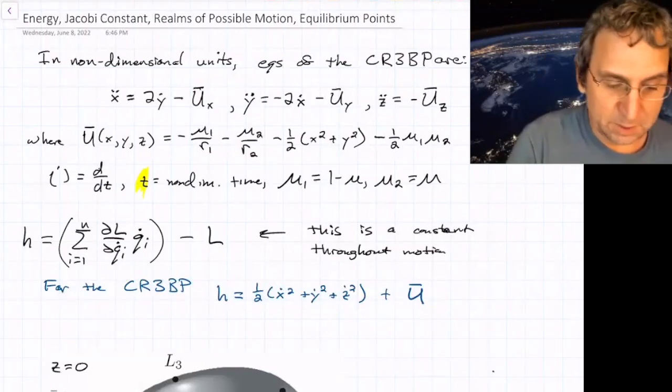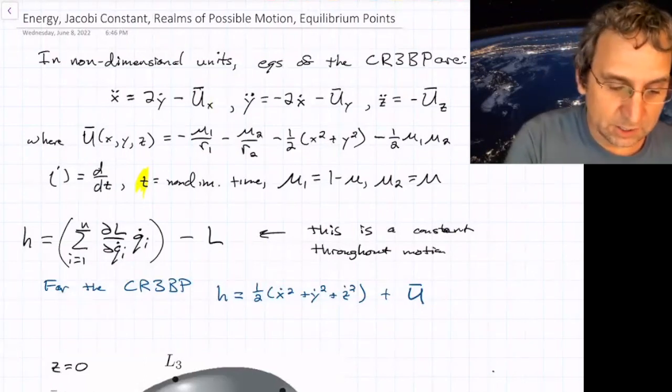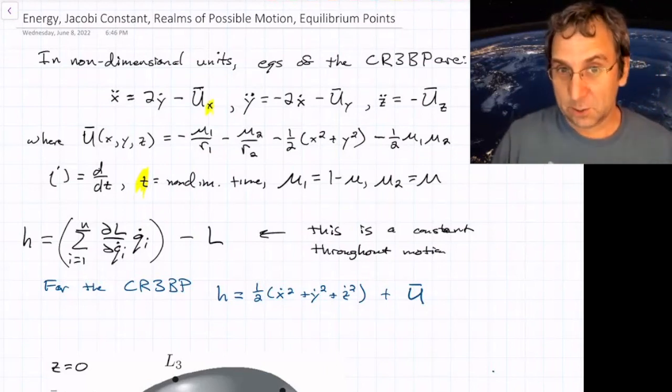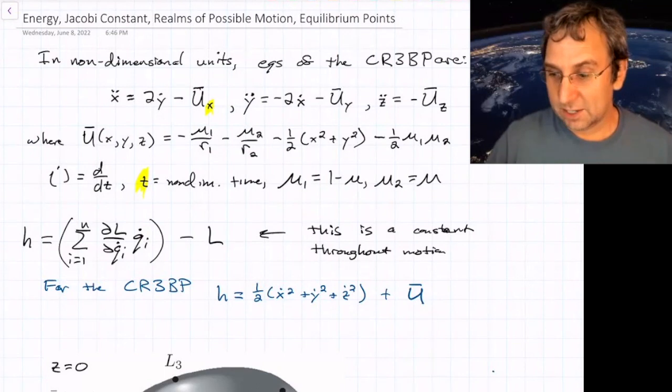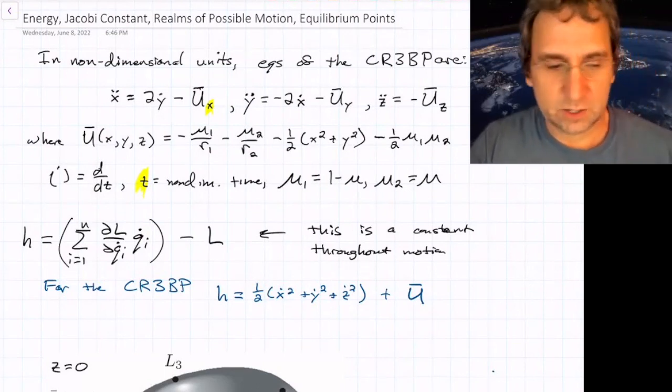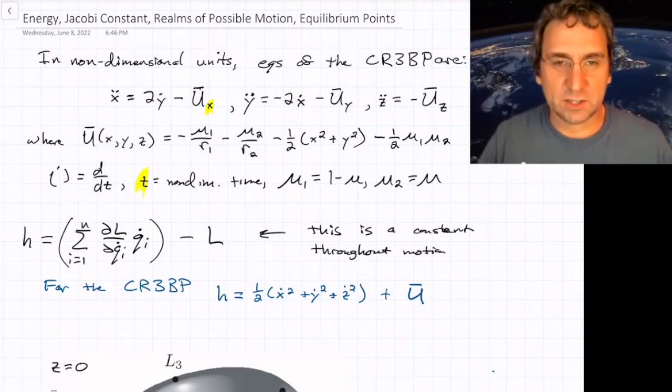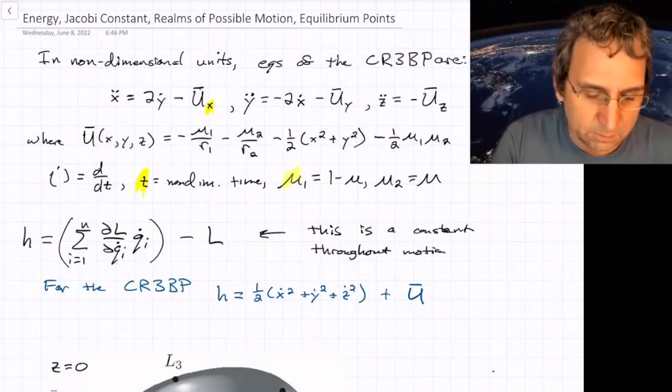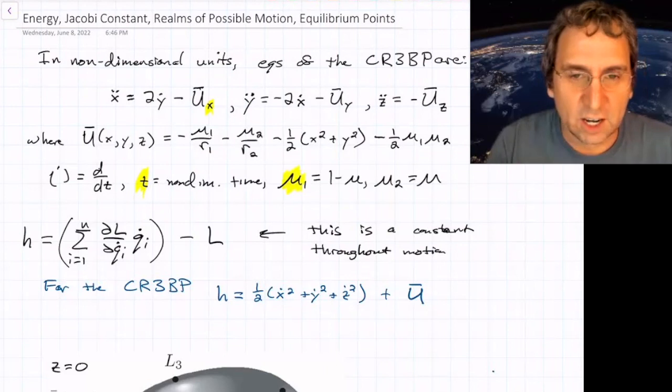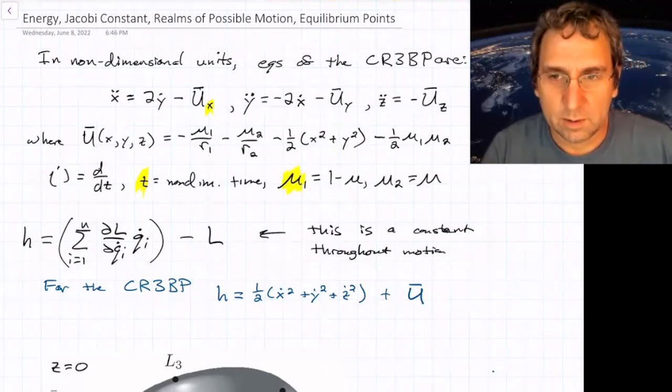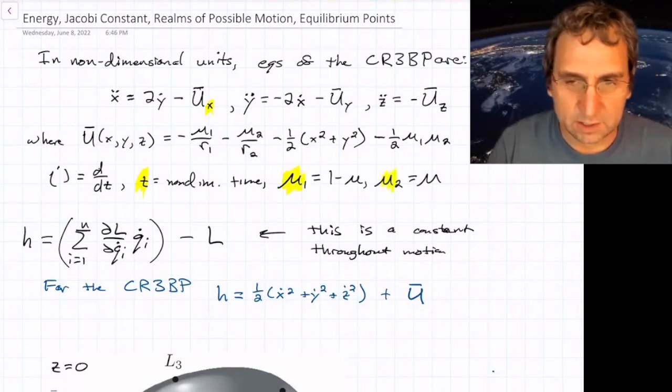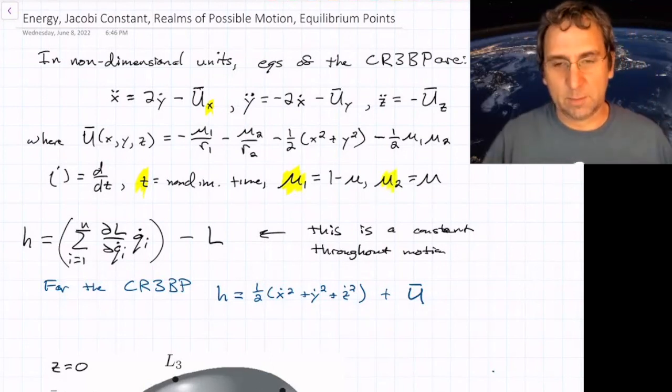I'm writing the effective potential as U bar, and then the little subscript just means partial derivative with respect to that variable. So I'll probably start using some of this quicker notation just to write things a little faster. Also, instead of writing one minus mu, I'll use mu one. So mu one is like the non-dimensional mass for the larger primary, and mu two is just mu, and that's the non-dimensional mass of the second primary.